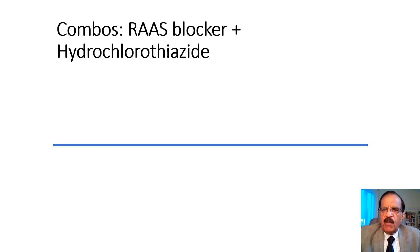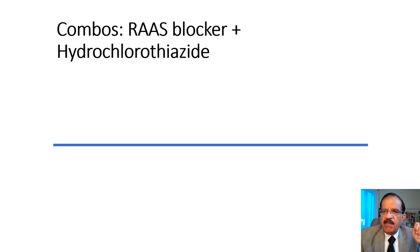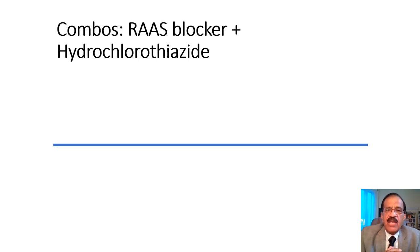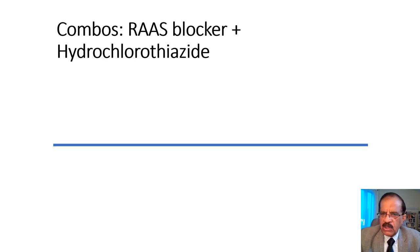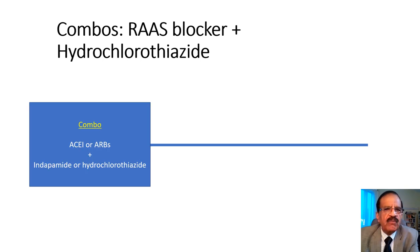Many times we use drug combinations. Although we have discussed characteristics of various antihypertensive agents separately, when we combine them their effects can change — there is complementary action on blood pressure and a very nice cancellation effect on side effects. Let's talk about the combination of RAS blockers — either ACE inhibitors or ARBs — with thiazide-type diuretics or thiazides. Various combinations are available: ACE inhibitors or ARBs paired with indapamide or hydrochlorothiazide.